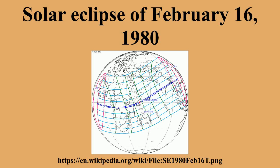The path of totality crossed Central Africa, Southern India, and into China at sunset.